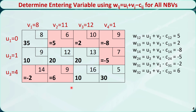Now we need to determine if all wij are less than or equal to 0. If they are, then the current basic feasible solution is optimal. Otherwise, choose the variable with the most positive wij as the entering variable. In this case, we still have some wij greater than 0, so this is not optimal yet. The most positive wij is equal to 6, so this cell will be the entering variable.